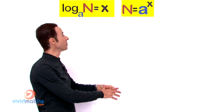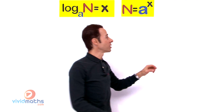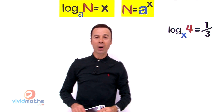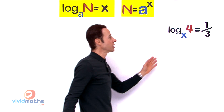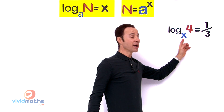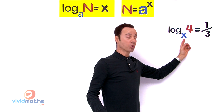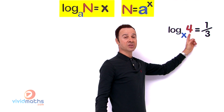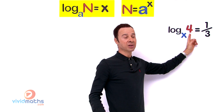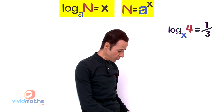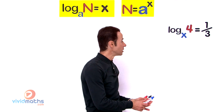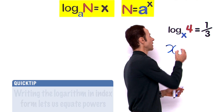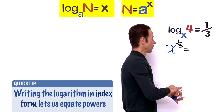The first step is to transform the logarithmic expression into exponent form. Looking at the example: log base x of 4 equals one third. The x down here is the base — you ask what the base needs to be with this fractional power to get 4. So in exponent form, x to the power of one third equals 4.